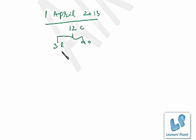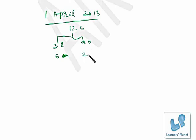For 3 leap years, 6 odd days. Then for 9 ordinary years: 1 ordinary year means 52 weeks plus 1 day, so 1 odd day per year. 9 ordinary years give 9 odd days; 9 divided by 7 gives remainder 2. So 2 odd days. Adding: 6 plus 2 equals 8, which means 1 odd day finally.